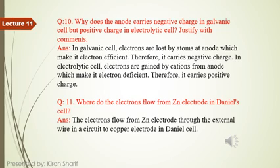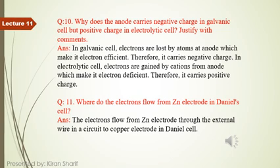Question number 10: why does the anode carry a negative charge in a galvanic cell but a positive charge in an electrolytic cell? In a galvanic cell, electrons are lost by atoms at the anode, which makes it electron-rich. Therefore, it carries a negative charge.